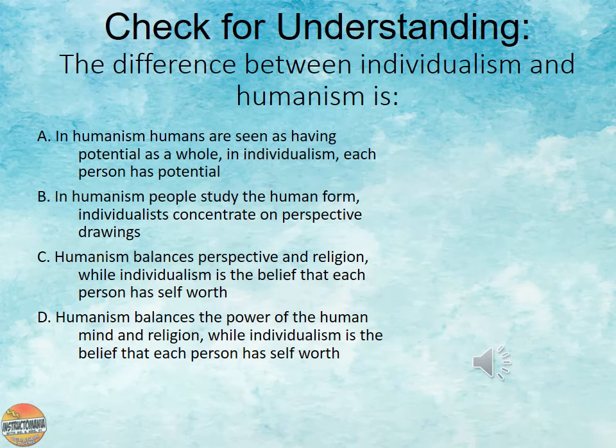Time to check if you were listening. The question is: the difference between individualism and humanism is? A: humanism — humans are seen as having potential as a whole; an individual — each person has potential. B: in humanism, people study the human form; individualists concentrate on perspective drawings. C: humanism balances perspective and religion while individualism is the belief that a person has self-worth. Or D: humanism balances the power of the human mind and religion while individualism is the belief that each person has self-worth. The answer is probably D.